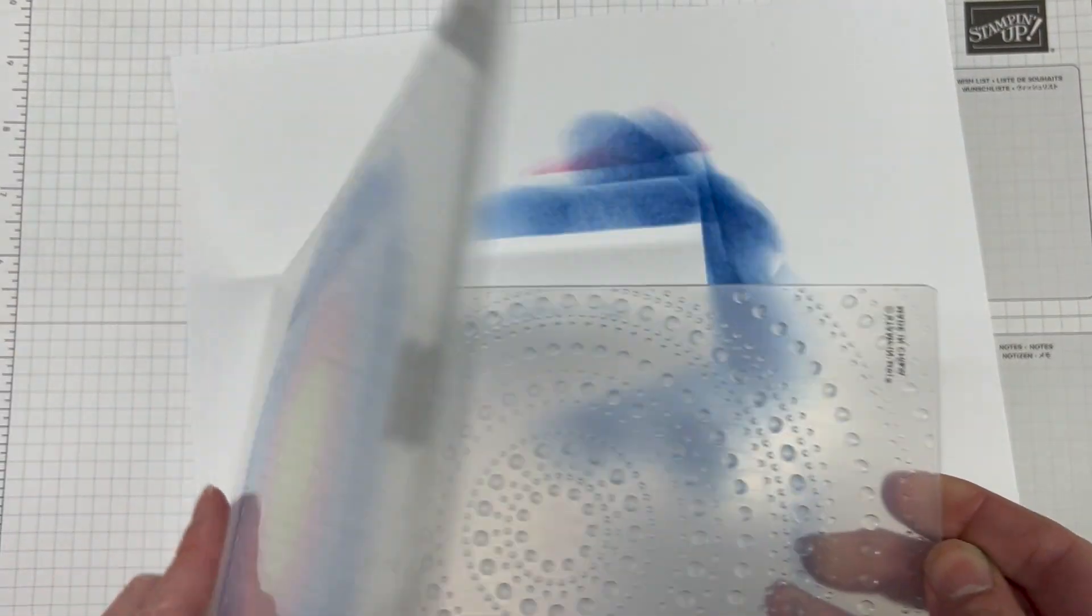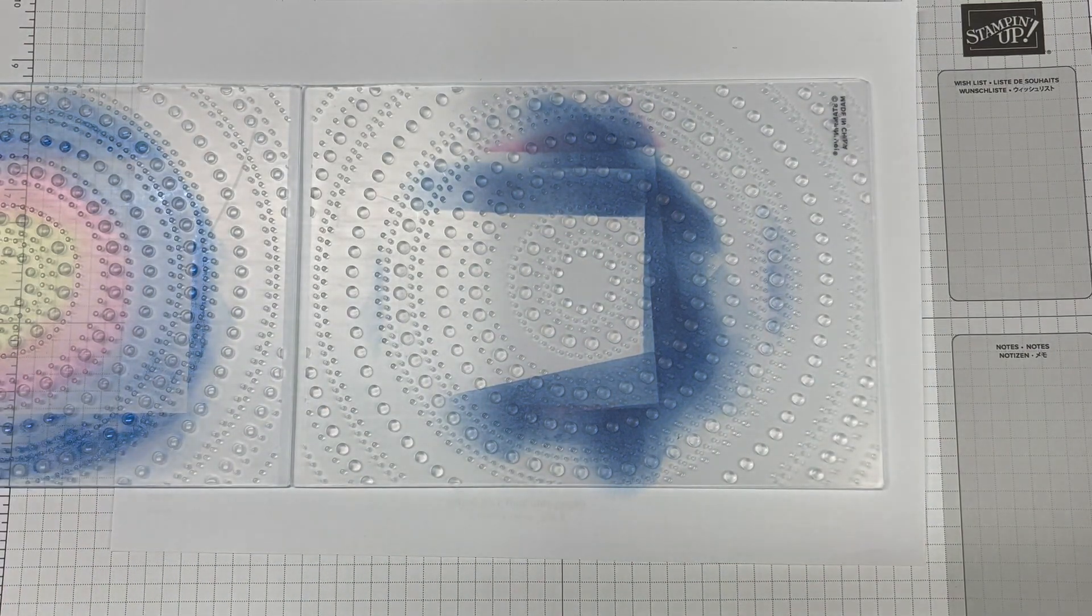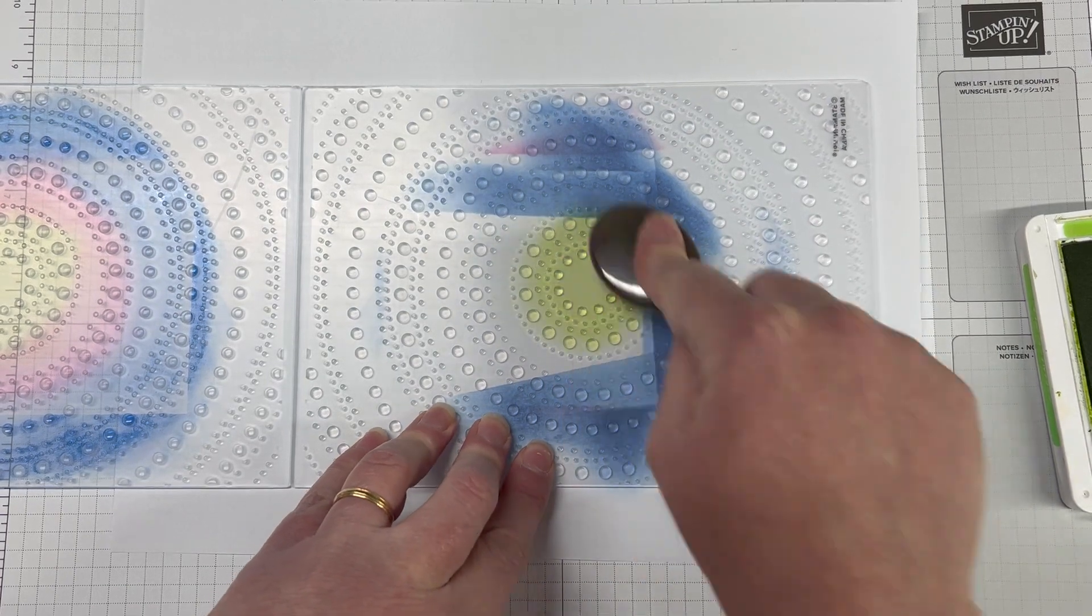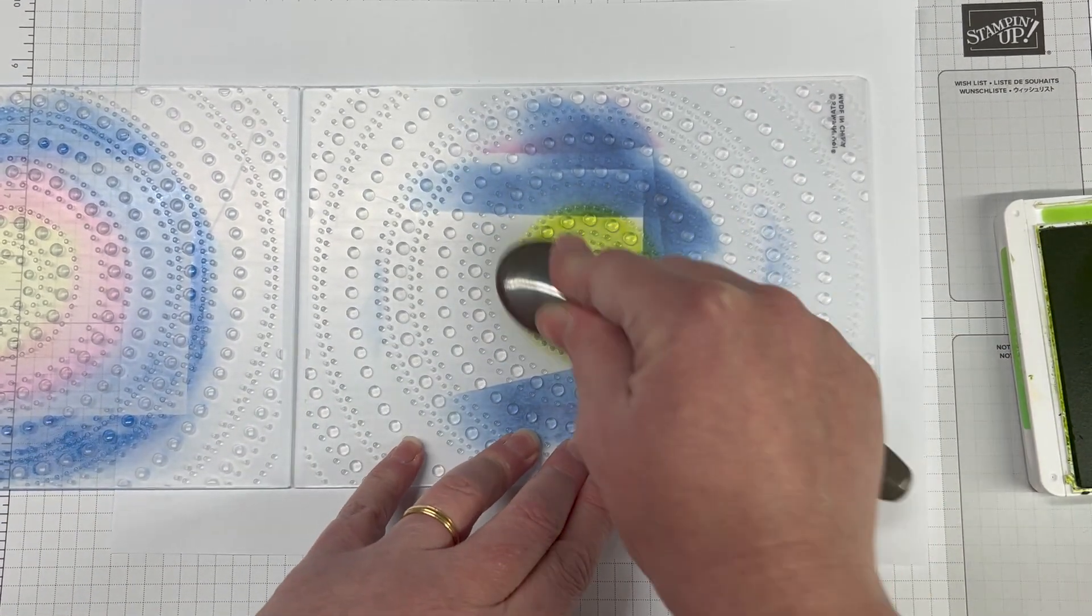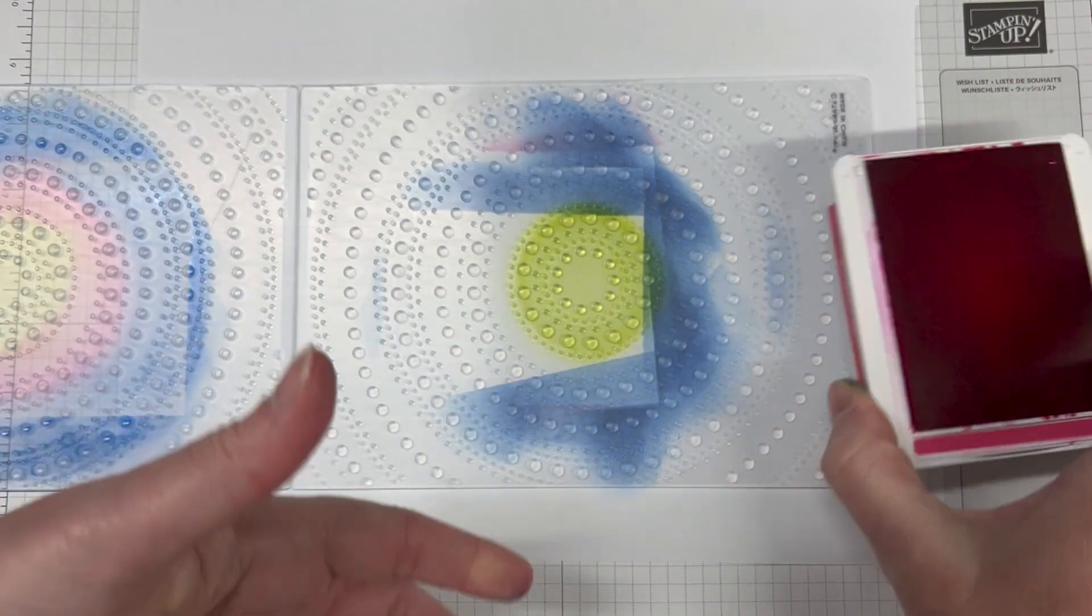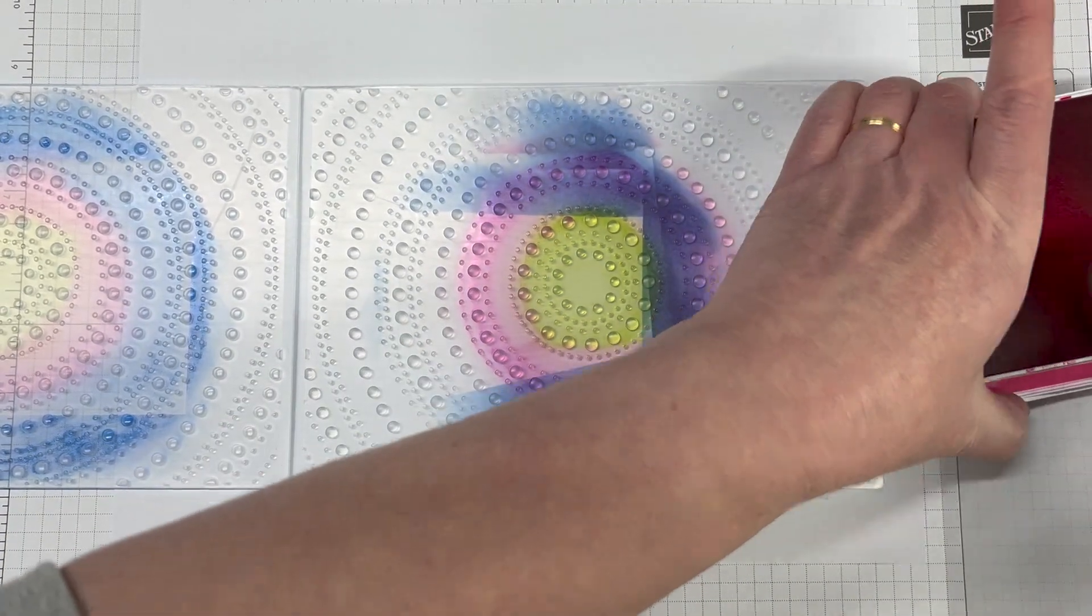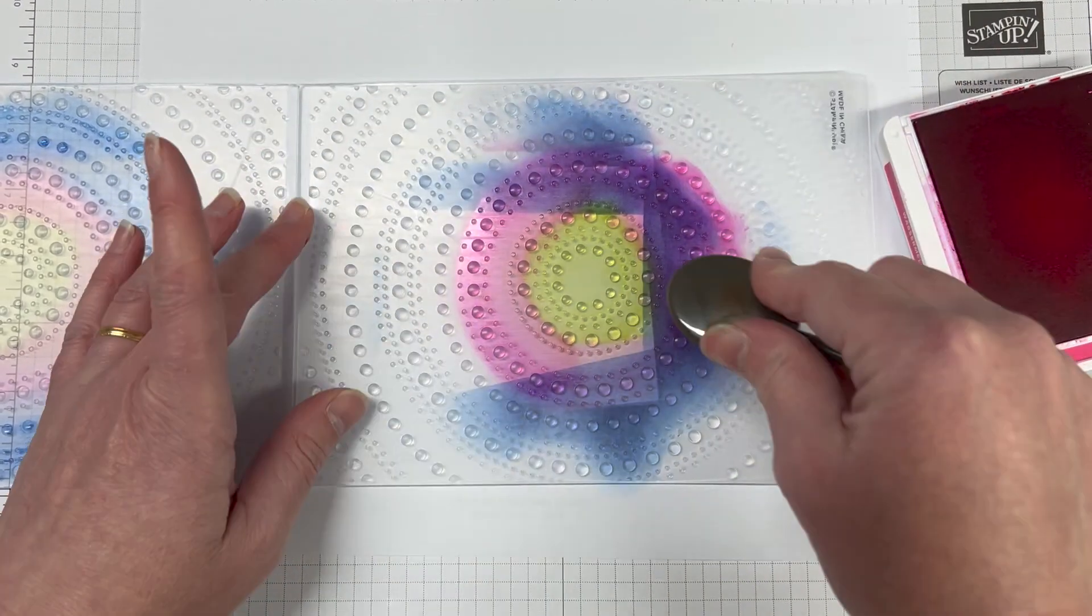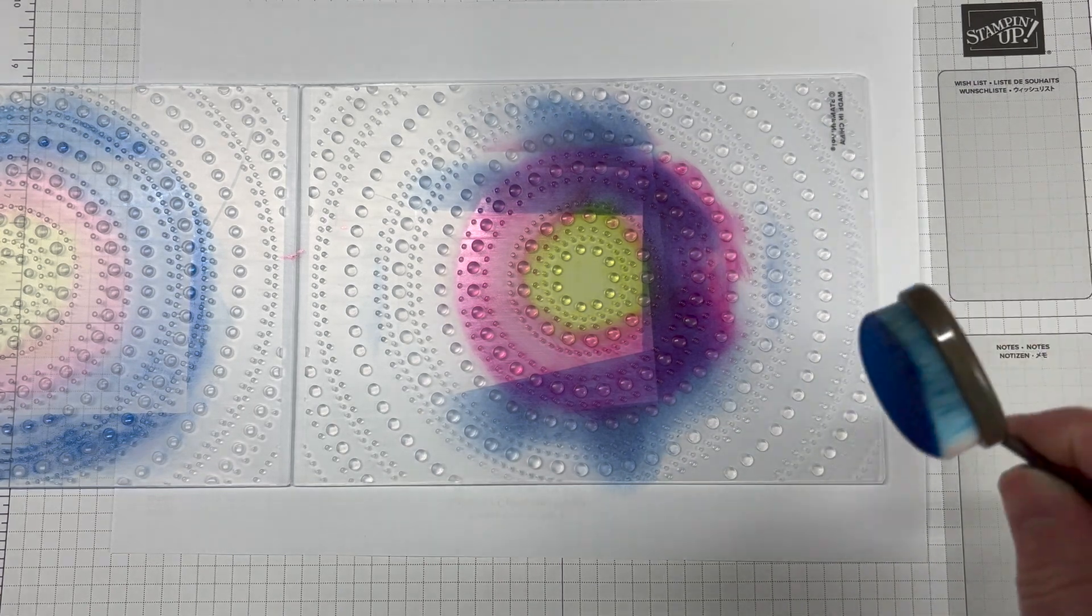Once we have our third colour down, we're done with our colouring and we can actually black out our image. This is the first way of doing it, where you run your basic white cardstock through the embossing folder and then add the colours with blending brushes. Now I'm going to do the same technique, but on the opposite side, where I add colour to the embossing folder itself.